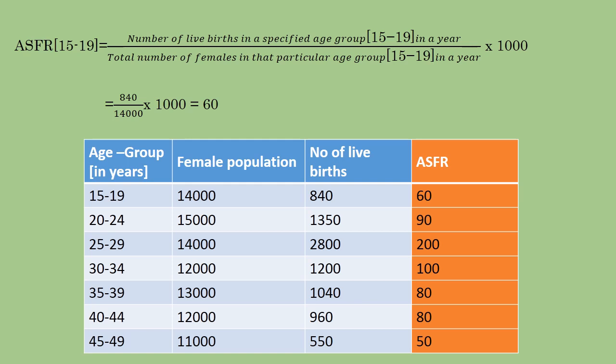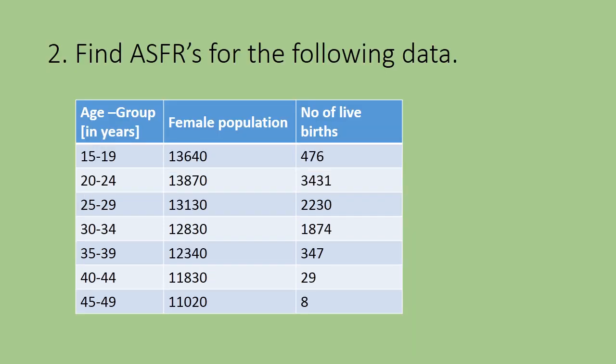So, 840 divided by 14,000 multiplied by 1000 gives the value 60 — the ASFR is 60. Similarly, for each age group we apply the same formula: number of live births in the specified age group divided by the female population in that age group, multiplied by 1000, to get the ASFRs.